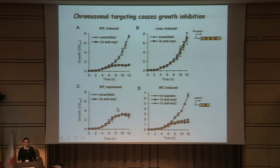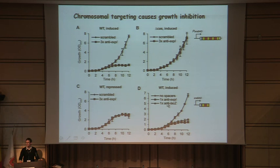When we then trim these arrays down to just one spacer — either against the quorum sensing gene or against the lacZ gene within the chromosome — we see that these also have an inhibitory effect. So one target appears to be all that's required.